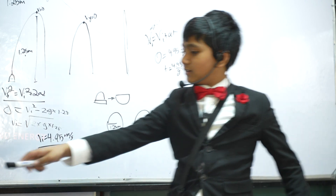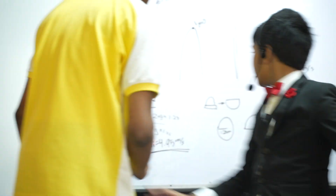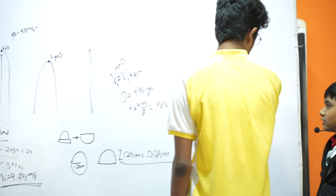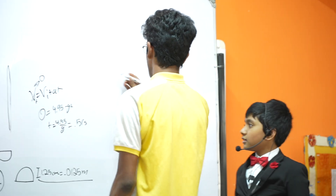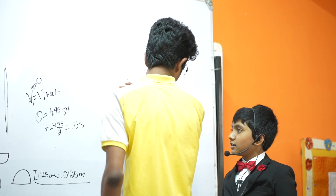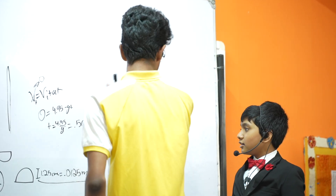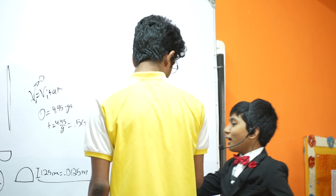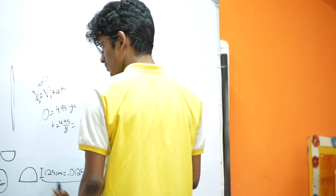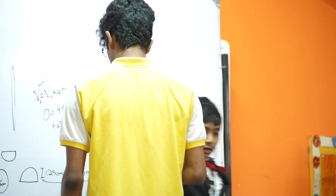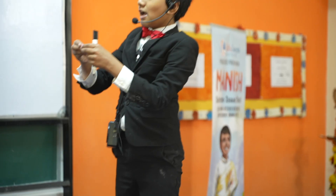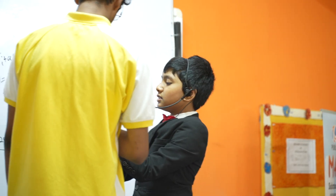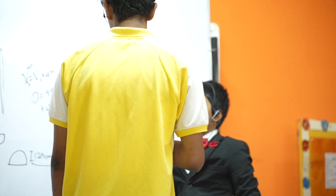Okay, so this for the problem. We know initial velocity is 4.95, and we know final velocity is 0. So the rate of change of velocity here — in this time, it changes this much. No, I'm not talking about while it's in the air. I'm talking about when it goes from this to this. What is the acceleration?